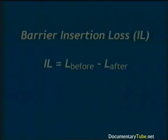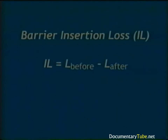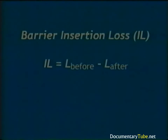The noise shadow behind a barrier is not well-defined — unlike optics, for sound it must be considered an area of noise reduction rather than absence. The deeper a receiver is positioned in the shadow zone, the greater the barrier attenuation. Barrier attenuation is represented by the term barrier insertion loss, defined as the sound level at a given receiver before construction of the barrier minus the sound level at the same receiver after construction.